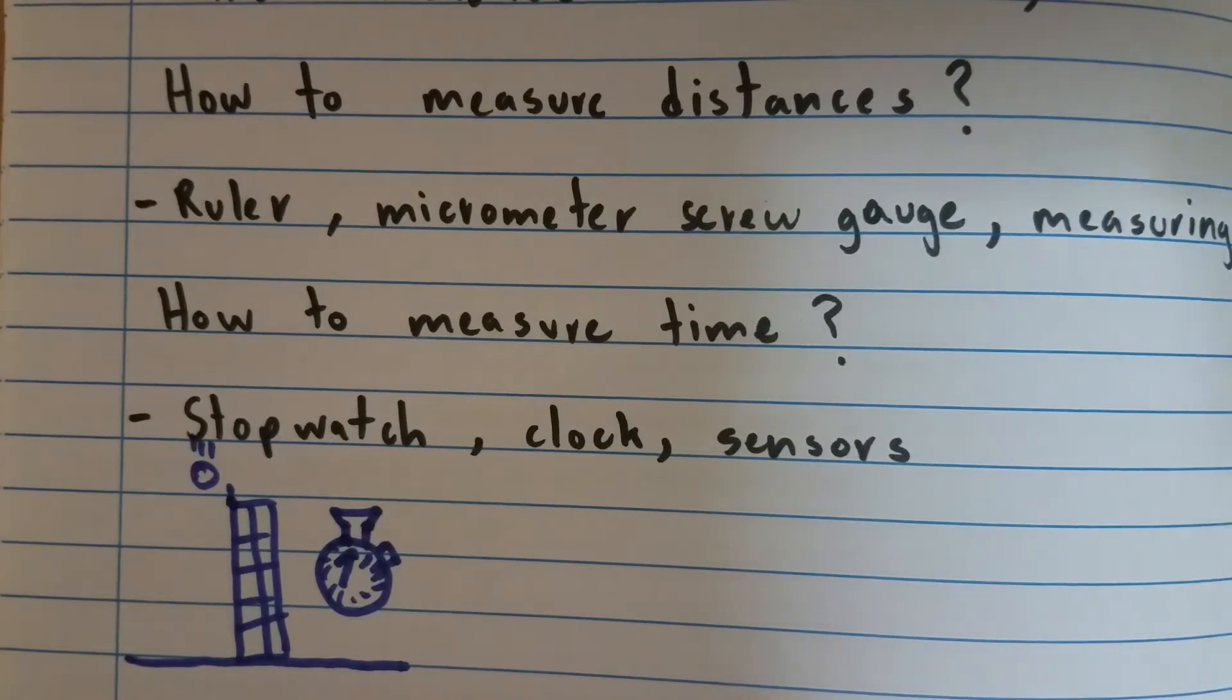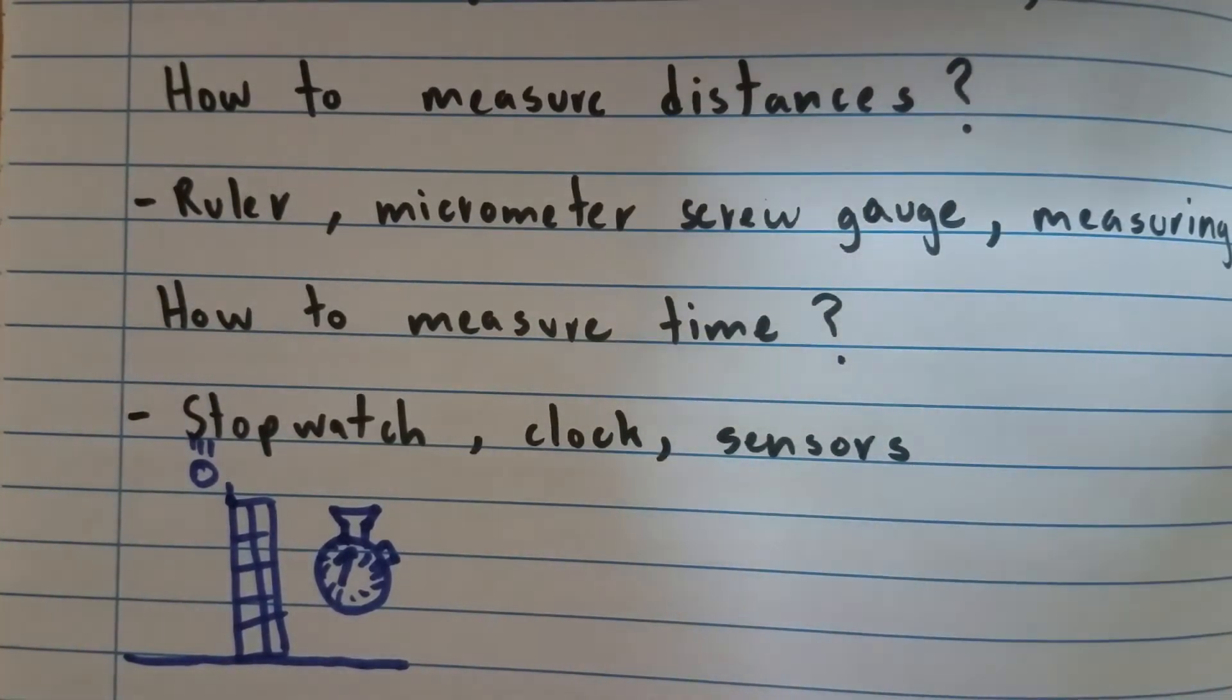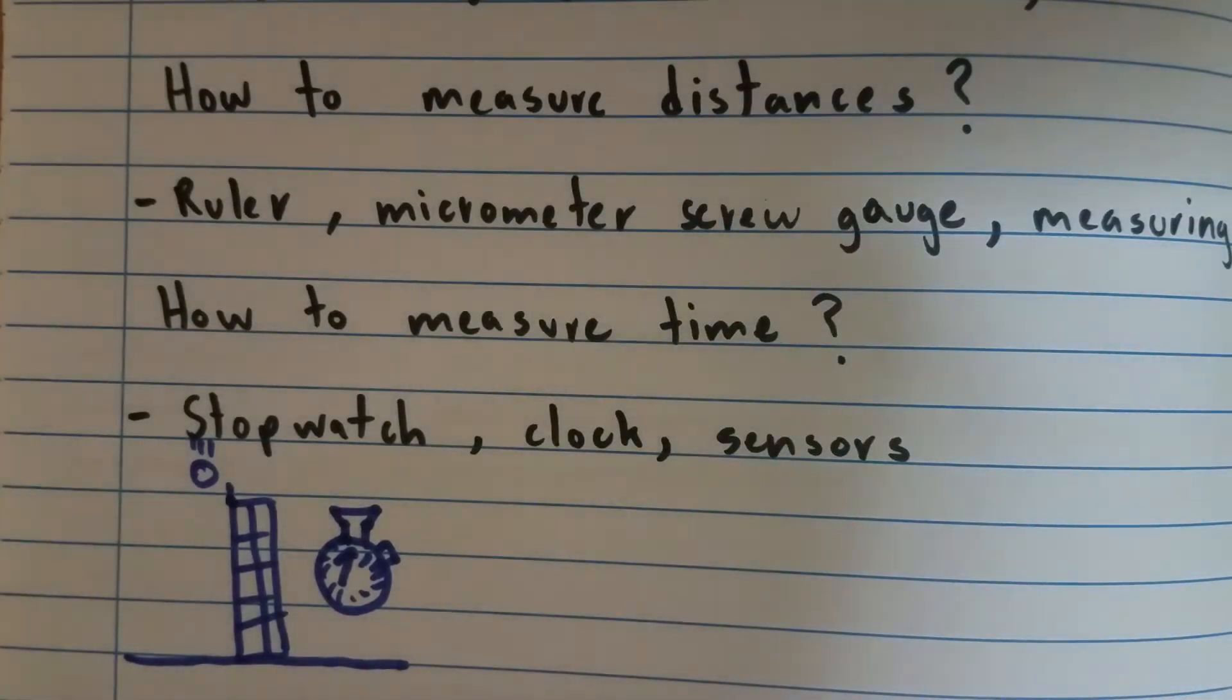So how do you measure time? You could measure time with a bunch of devices: stopwatches, clocks, sensors. The stopwatch is the most common one.